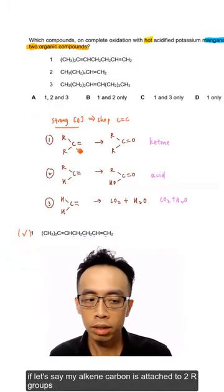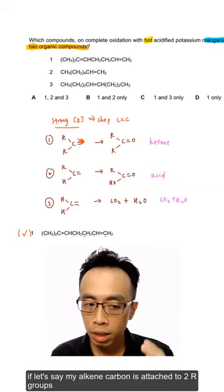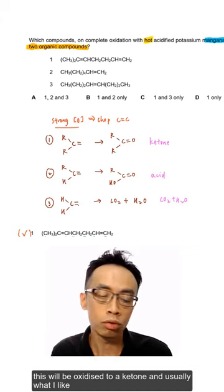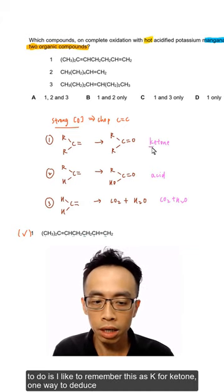If my alkyne carbon is attached to two R groups, this will be oxidized to a ketone. I like to remember this as K for ketone.